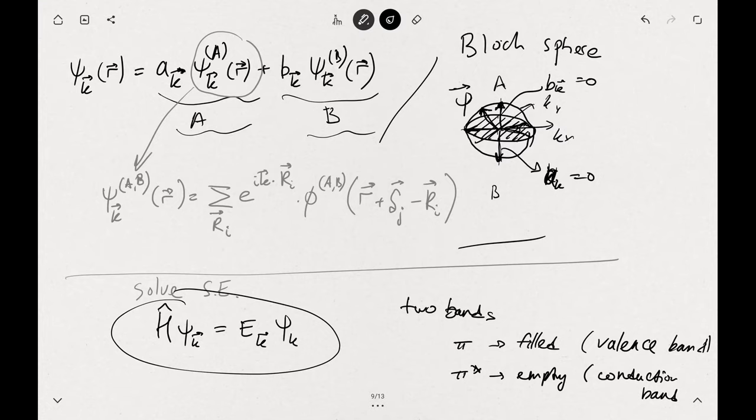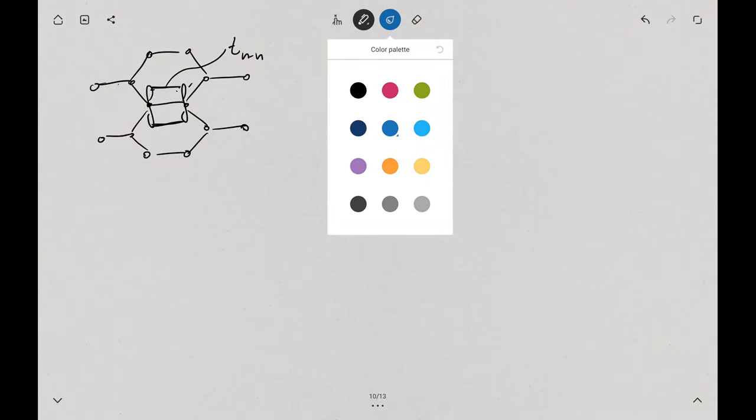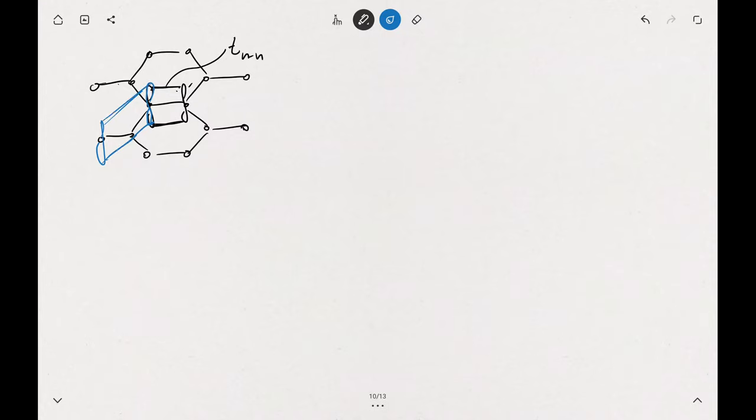The question would be how precisely we want to do the calculations and how many interactions we want to take into account. You can consider first only the overlap between the nearest neighbors, so these are T nearest neighbor, the overlap between the nearest neighbor orbitals. But you can also consider the overlap between the next nearest neighbors. Those are quite further away, so they should be much weaker. This T next nearest neighbor will give you some additional, more precise results on those electronic bands.